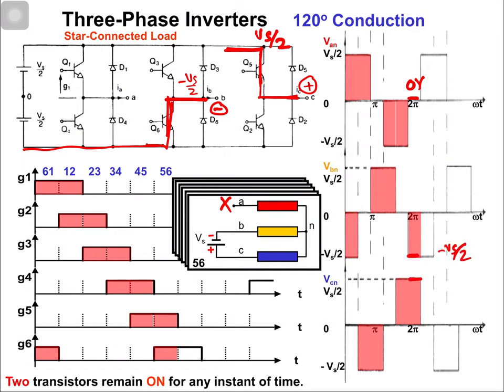After this, the switching states are repeated: 1 and 6, 1 and 2, 2 and 3, 3 and 4, 4 and 5, 5 and 6, and so on. We get these as the phase voltages. Comparing with the previous 180 degree star connected conduction discussion, what we were getting in the line voltages we are now getting in the phase voltages — the quasi-square waveform.